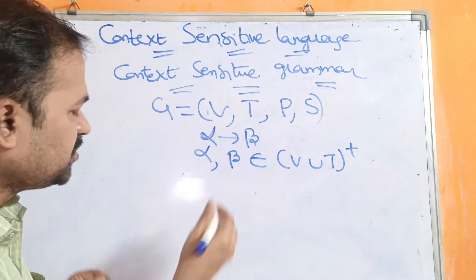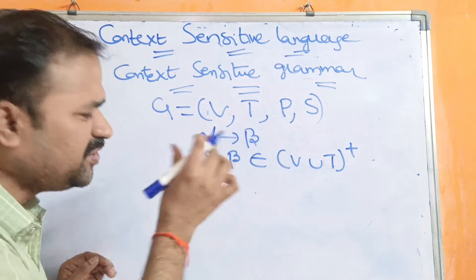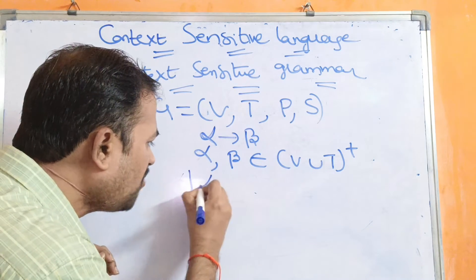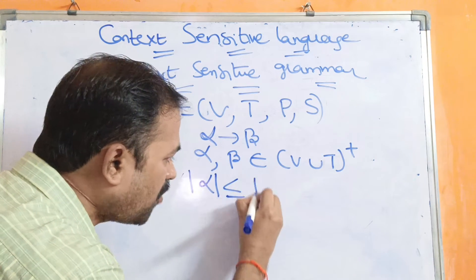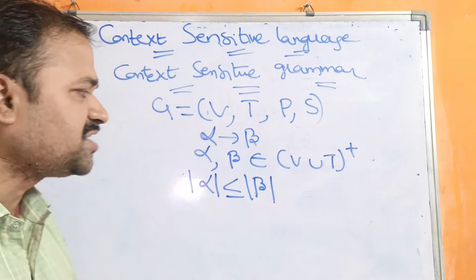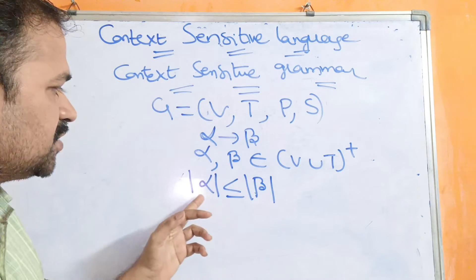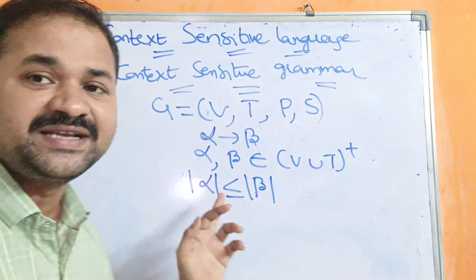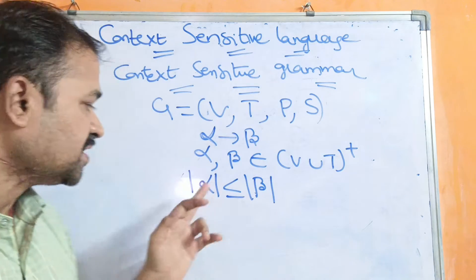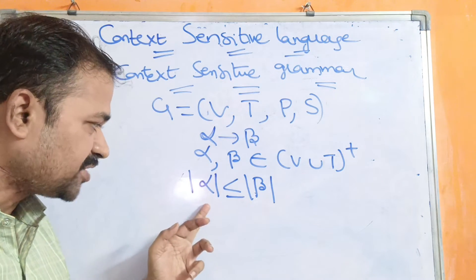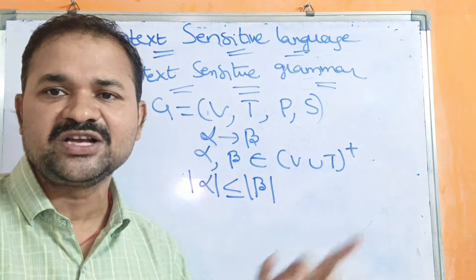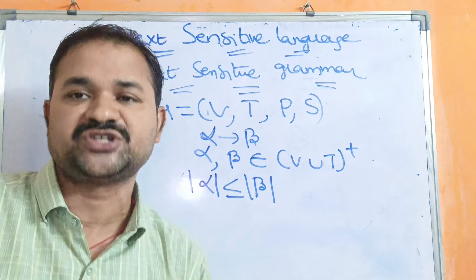Let us see some examples. We need to follow one more condition: mod alpha is less than or equal to mod beta. Mod means length, so the length of the left hand side production should be less than or equal to the length of the right hand side production.